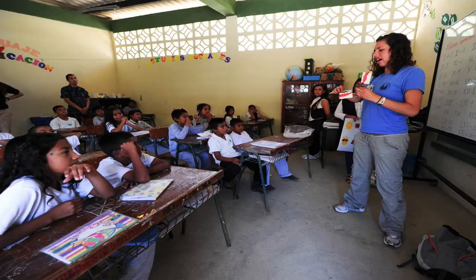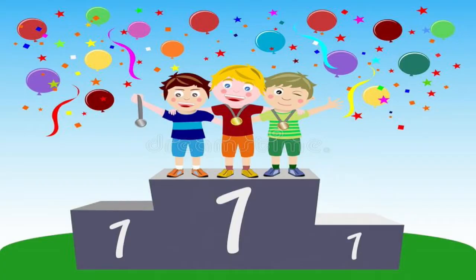During school, it happened many times that we got the same rank as some of our classmates. This happened because all those classmates had the same number of marks, so all were provided the same rank. But what would be the rank of the student who scored just less than those people — what would be the rank of that next student?